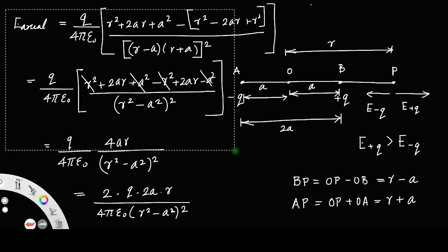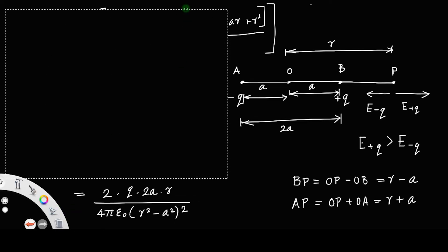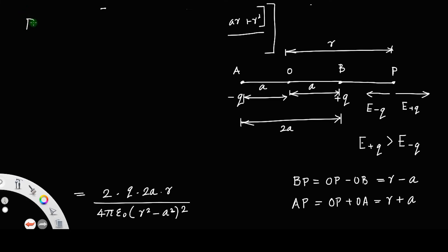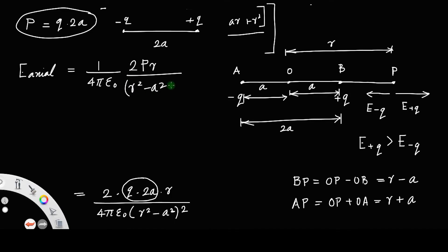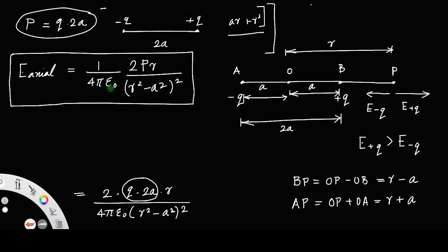The dipole moment p is defined as one of the charges q multiplied by the distance between the charges 2a, so q × 2a = p. Therefore, E_axial equals (1/4πε₀) · 2pr / (r²−a²)². This is the magnitude of the net electric field at a point on the axial line.